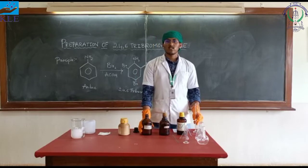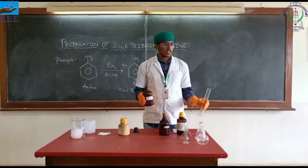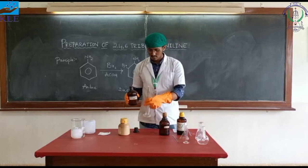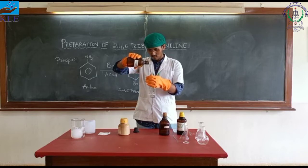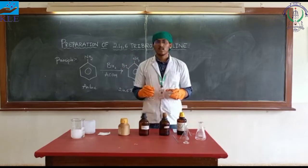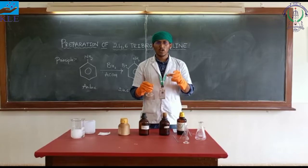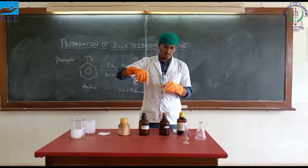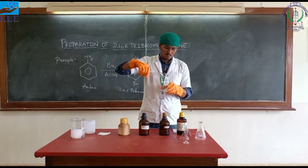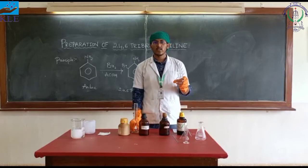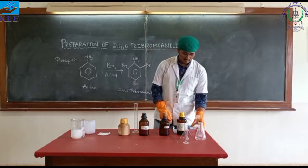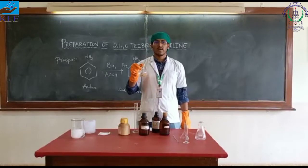Now coming to the procedure: take 50 ml of glacial acetic acid with the help of a measuring cylinder. Now pour this glacial acetic acid into a round bottom flask and add 0.05 ml of aniline to it. Now stir this solution.